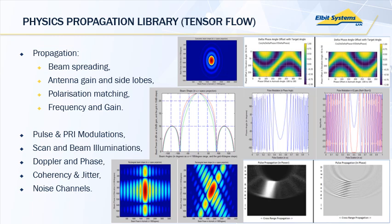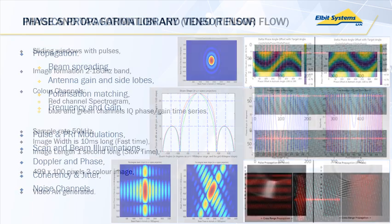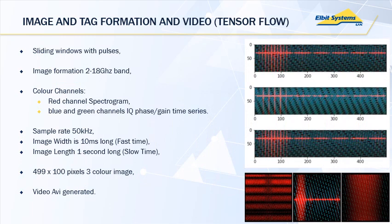That is now connected into TensorFlow as a DLL, and it is feeding a scenario generator with a propagation library, which is generating all the high-bandwidth IQ data so that it can be used to create a dataset. That dataset is formed of images using a sliding window effect per pulse. The image formation covers the band 2 to 18 gigahertz, which is 16 gigahertz wide. It has a red channel which is the spectrogram, and a blue and green channel which is the IQ phase time series.